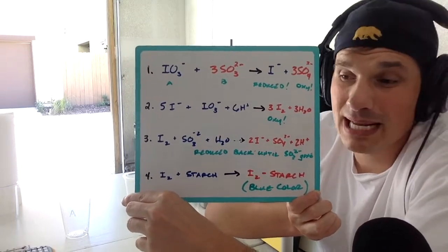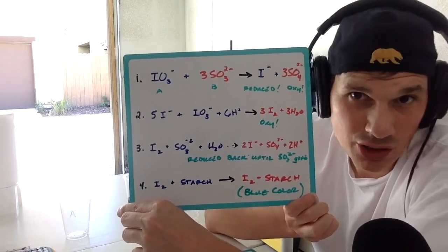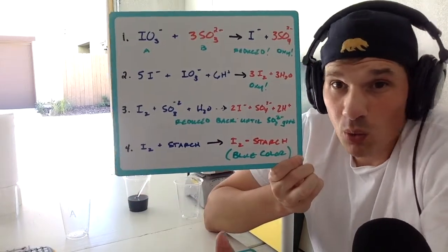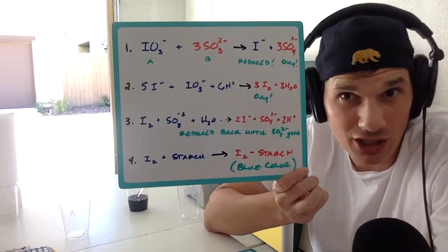So, all that's happening in that span of like 10 seconds until those two clear solutions turn blue. That's what's going on there. That fourth step, what actually is that blue color? Well, remember the last thing in there in solution B was the starch.